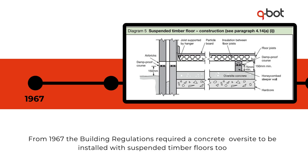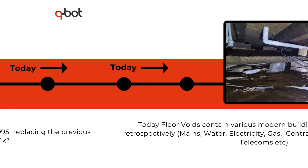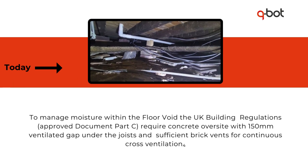From 1967, building regulations required concrete oversight to be installed with suspended timber floors. Floor insulation requirements were first introduced in 1995, replacing the previous minimum U-value of 1.2. Today floor voids contain various modern building services introduced retrospectively. UK building regulations require concrete oversight with a 150mm ventilated gap under the joists and sufficient brick vents for continuous cross ventilation.